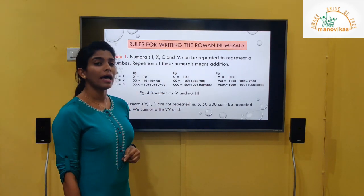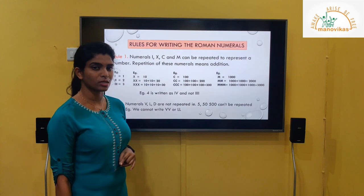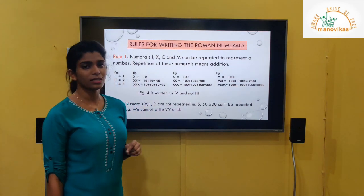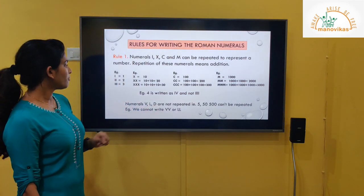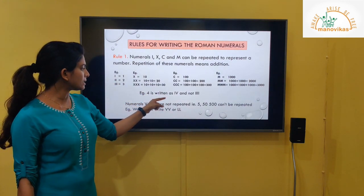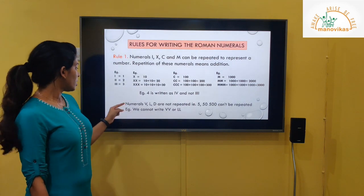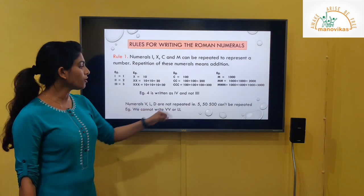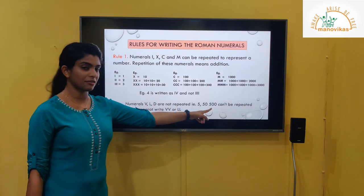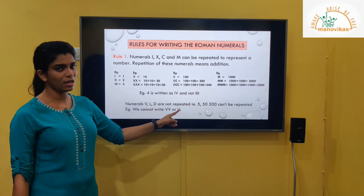Three C's will be 300. Next is M. The value of M is 1000. Two M's give us 2000, and three M's give us 3000. We cannot repeat numerals more than 3 times — for example, 4 is written as IV, not four I's. Numerals V, L, and D are not repeated; we cannot write VV, LL, or DD.